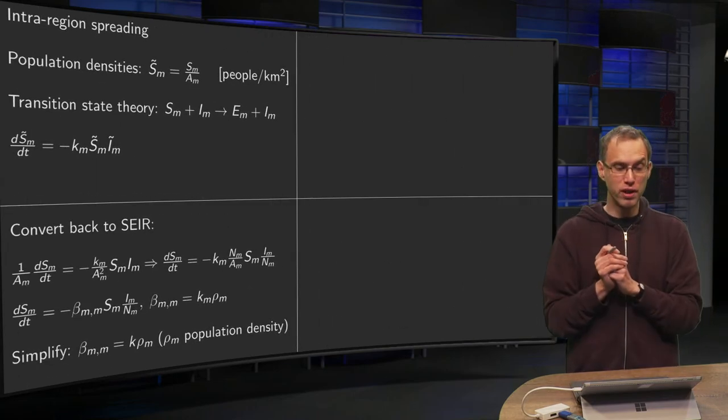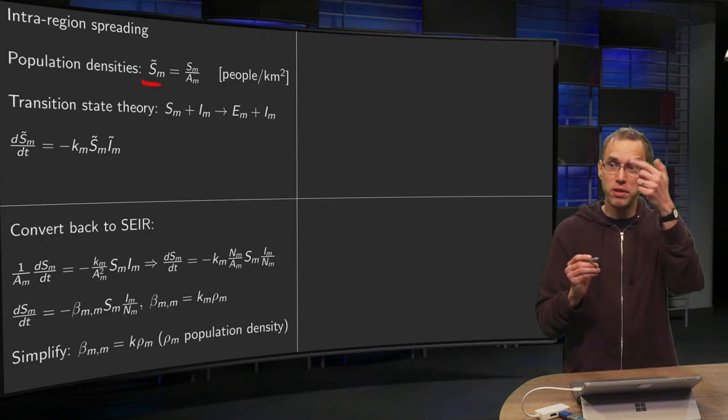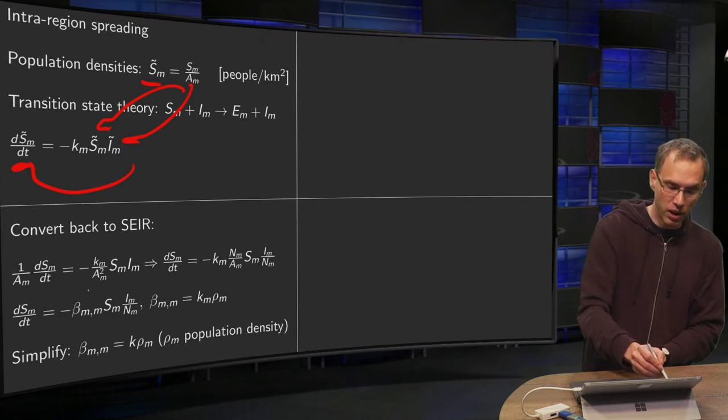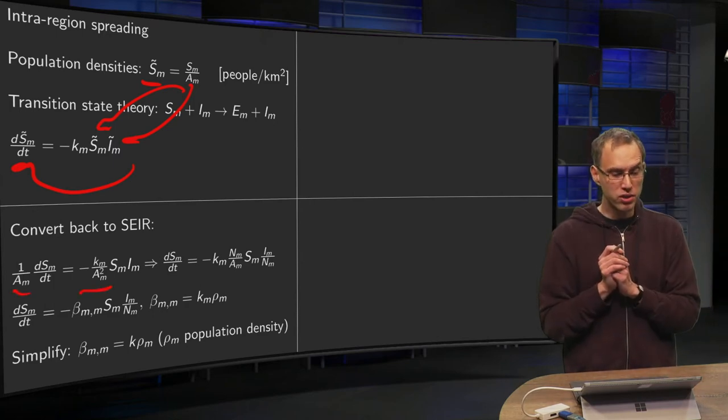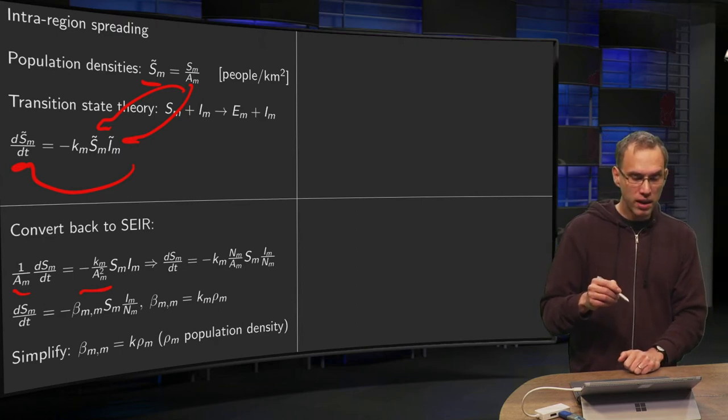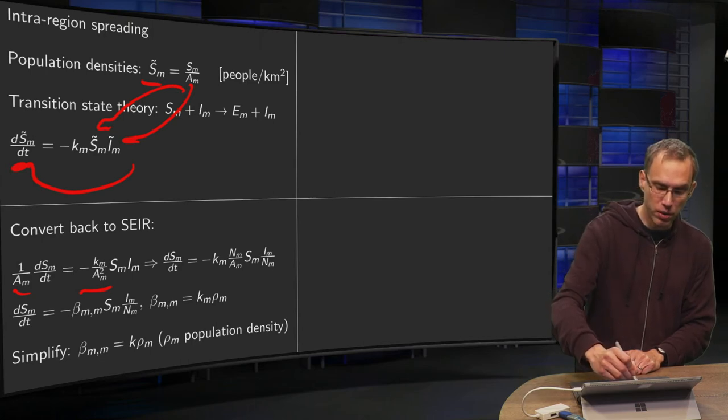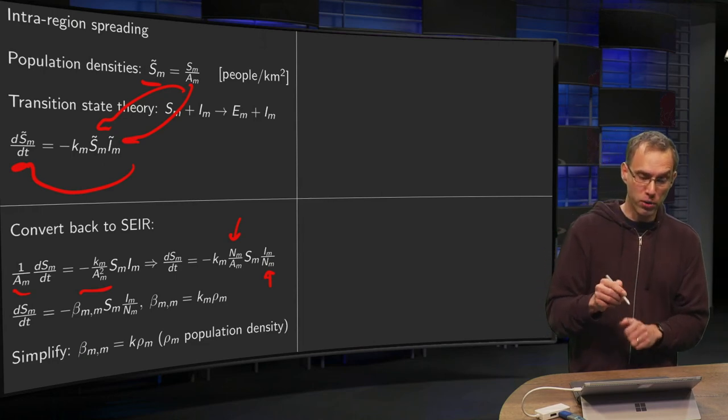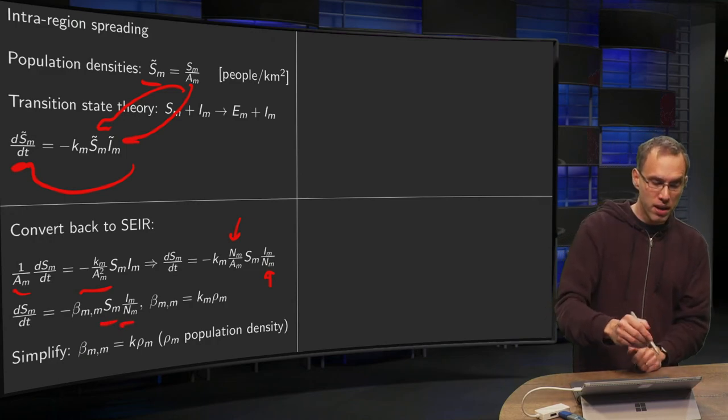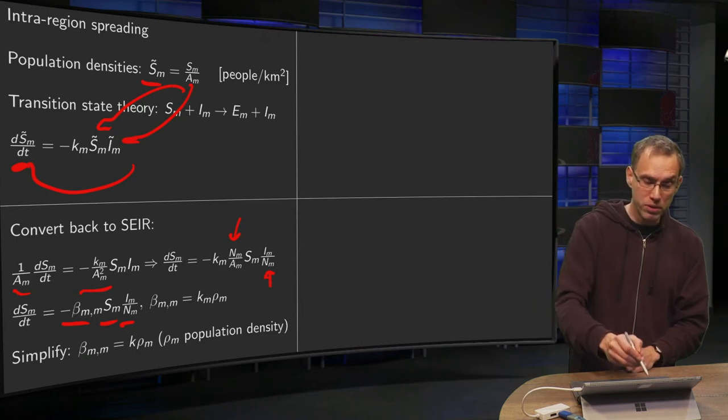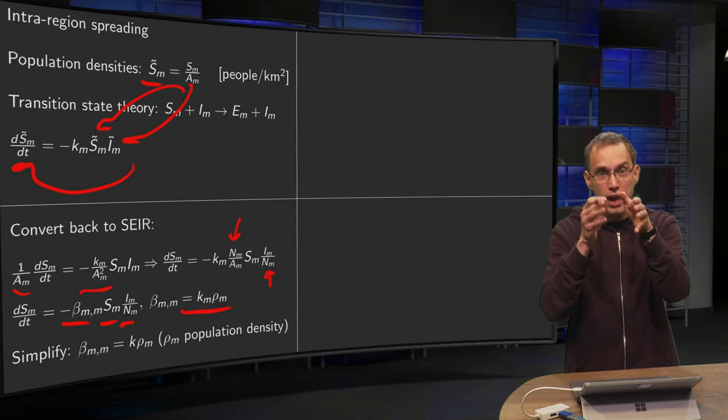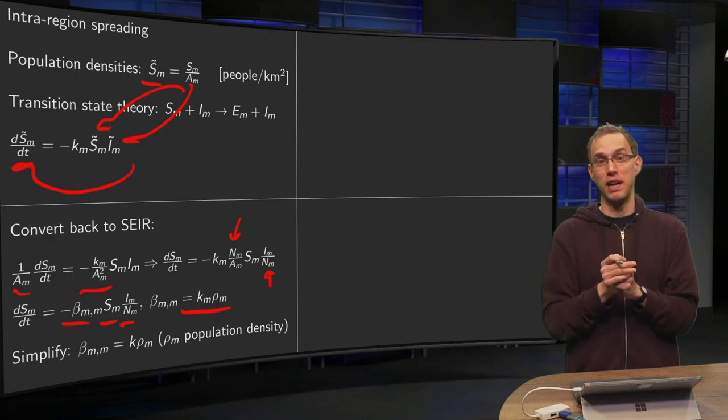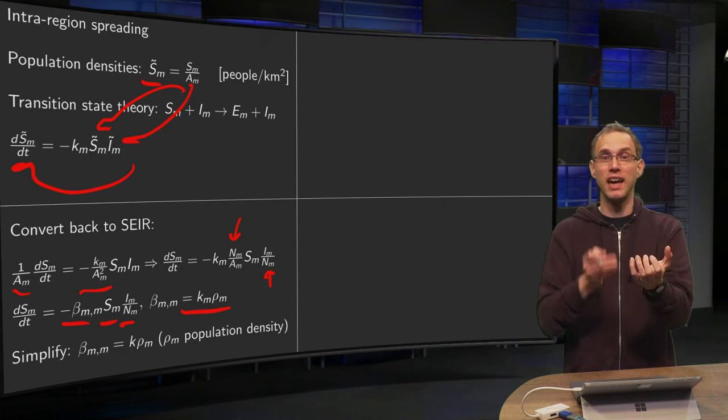We can convert this back. Because our tilded variables are SM divided by our constant AM, we can just put this in here, there and there, which means that you add it with an AM squared here and 1 over AM there. Cancel one factor AM out. And then you see if you also divide by the number of people in your region, that you get basically back your SEIR model with your SM, your IM over NM over here, and beta over here, where beta now becomes some constant KM times NM over AM, which is your population density.